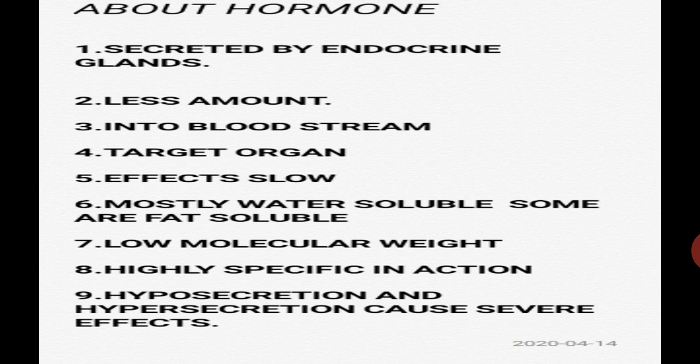Properties of hormones: Property one — hormones are secreted by the endocrine glands as chemical substances. Property two — hormones are secreted in very small amounts. Property three — because endocrine glands are ductless, hormones are directly discharged into the bloodstream and carried to the target organ. Property four — hormones have a specific target organ. Property five — effects of hormones are very slow. Property six — the majority of hormones are water-soluble, but some are fat-soluble.